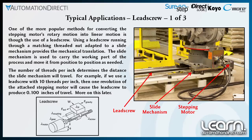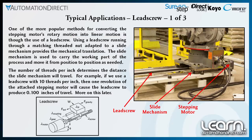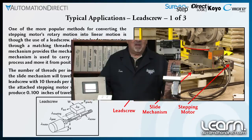For example, if we use a lead screw with 10 threads per inch, then one revolution of the attached stepping motor will cause the lead screw to produce 0.100 inches of travel — let's call it a tenth of an inch of travel.